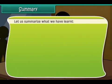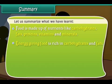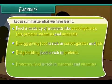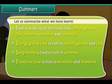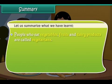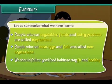Let us summarize what we have learned. Food is made up of nutrients like carbohydrates, fats, proteins, vitamins and minerals. Energy giving food is rich in carbohydrates and fats. Body building food is rich in proteins. Protective food is rich in minerals and vitamins. Plants make their food in their leaves. People who eat vegetables, fruits and dairy products are called vegetarians. People who eat meat, eggs and fish are called non-vegetarians. We should follow good food habits to stay fit and healthy.